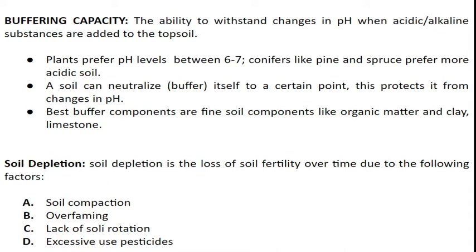Plants in general prefer pH levels between 6 and 7 — more on the neutral side. Conifers, which are what we call evergreens — like pine, spruce, Douglas fir, and cedars — prefer soil that's a bit more acidic.